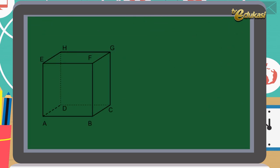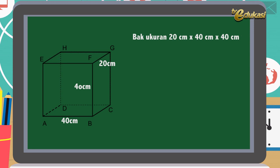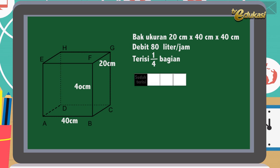Solusi. Informasi: bak ukuran 20 cm × 40 cm × 40 cm, debitnya 80 liter per jam, terisi seperempat bagian. Langkah-langkah: perhatikan 4 kotak ini. Satu kotak yang berwarna hitam dianggap volume yang sudah terisi. Jadi yang belum terisi 3/4 bagian.